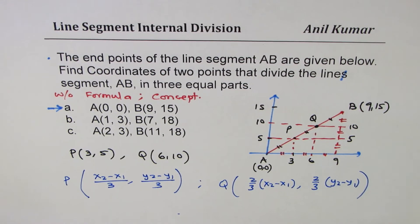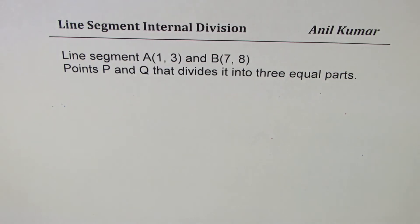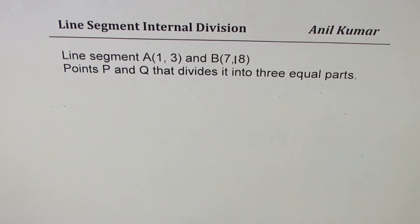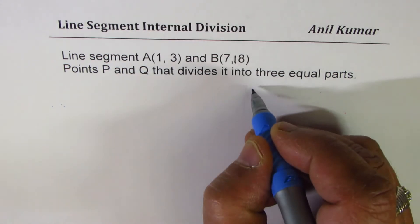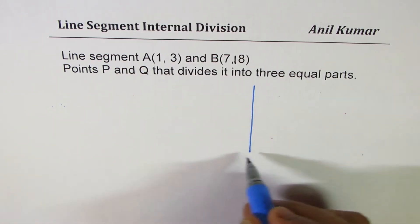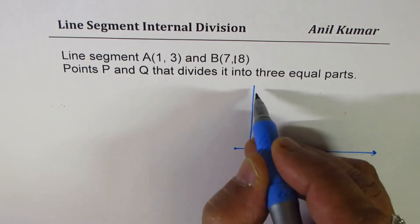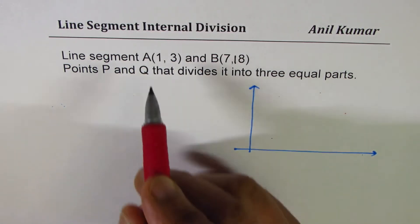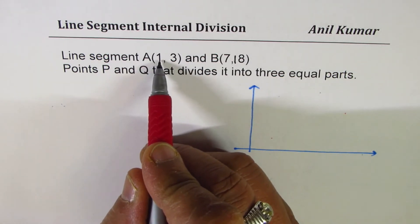Now, let's take the second one, where there is a slight difference. Well, here is a typing error. It is 18, not 8. Now we have a line segment. This time, the line segment has been translated towards the right a bit. Let me redraw this. We are saying AB, but A is not at the origin. It is at 1, 3. Let's say this is A and this is B. They are not to the scale. We are trying to understand the concept.